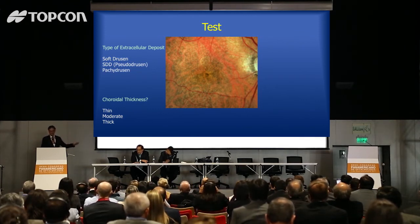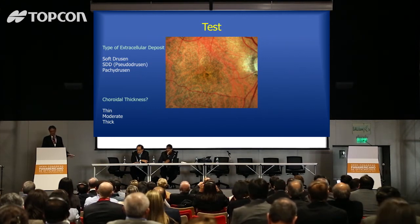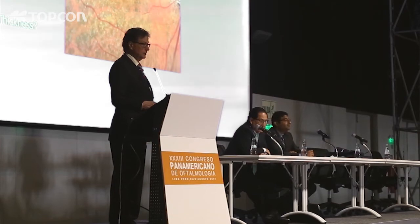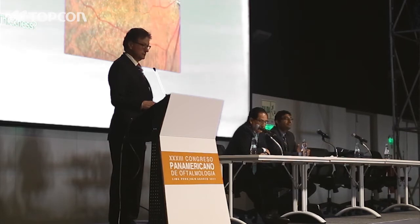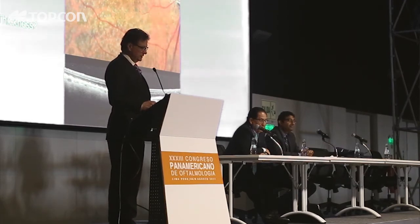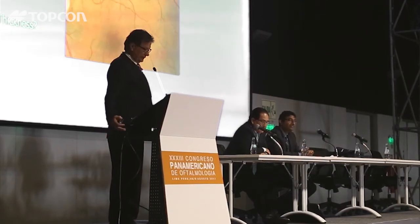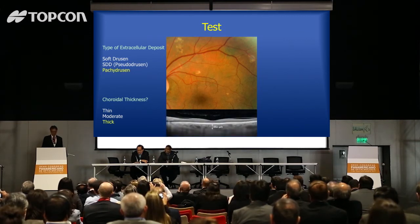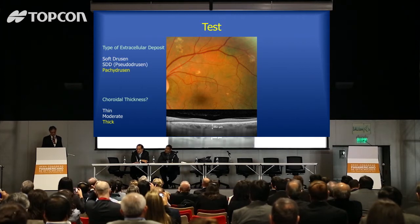What about this? These are small scattered dots with fairly uniform spacing between them. If you look at the choroid, it's easy to see large choroidal blood vessels. That's pseudodrusen, right? And the choroid is thin — 38 microns thick, with pseudodrusen. And the last one — bizarre-shaped drusen, you can't really see the choroidal blood vessels, reddish appearance, pigmentary changes between them. Those are pachydrusen, and the choroid is quite thick.